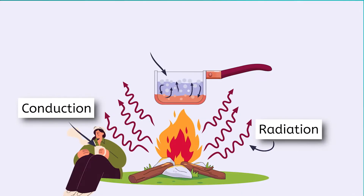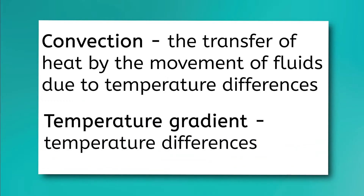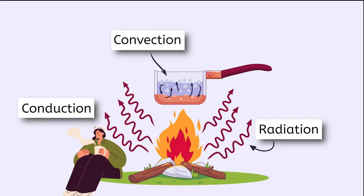This is conduction — heat moving through direct contact between materials. We can see the final method of heat transfer in the hot water over the stove. The bubbles and currents inside the pot? This is one example of convection — the transfer of heat by the movement of fluids due to temperature differences. These temperature differences are called a temperature gradient. So in this picture, we can see three mechanisms of heat transfer: radiation, conduction, and convection.